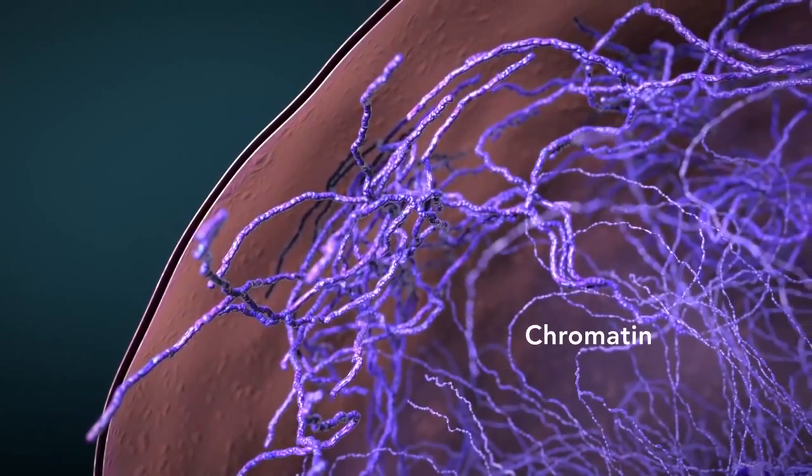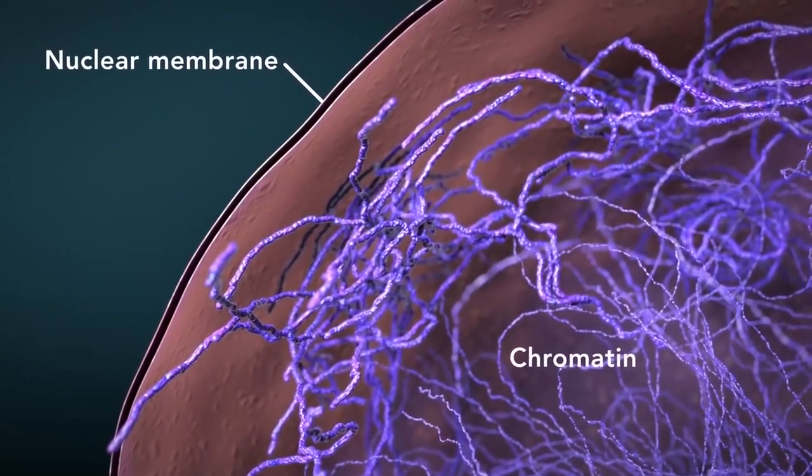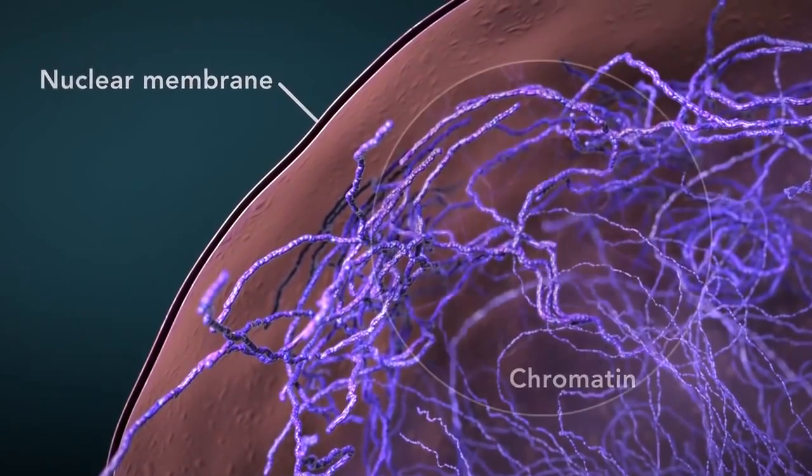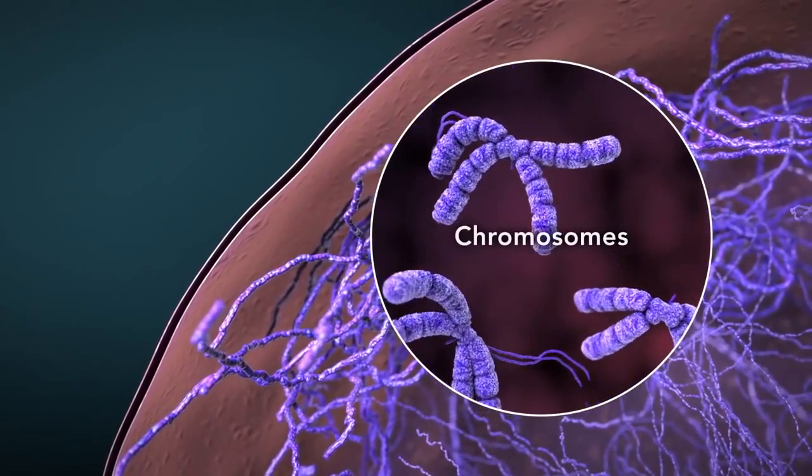Chromatin is the tangled spread out form of DNA found inside the nuclear membrane. When a cell is ready to divide, DNA condenses into structures known as chromosomes.